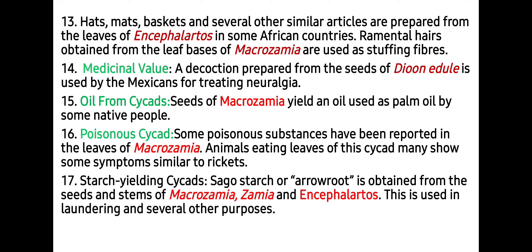Heads obtained from the leaves of Macrozamia are used as a stuffing fiber. Medicinally, a decoction prepared from seeds of Dioon edule is used by Mexicans for treating neuralgia. Oil from cycad seeds — seeds of Macrozamia yield oil used as palm oil by some native people. Some poisonous substances have been reported in the leaves of Macrozamia; animals eating these leaves may show symptoms similar to rickets. Sago starch is also obtained from the seeds and stem of Macrozamia, Zamia, and Encephalartos, used in laundering and several other purposes.